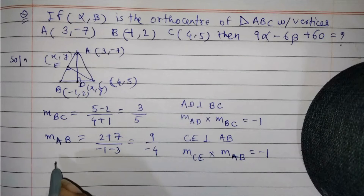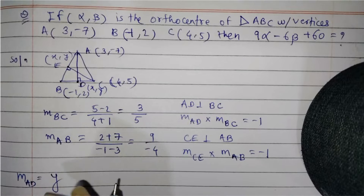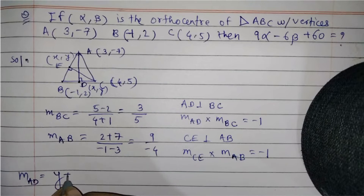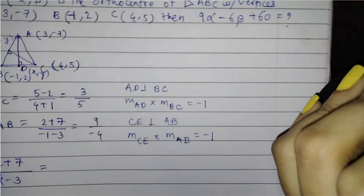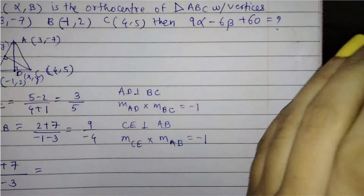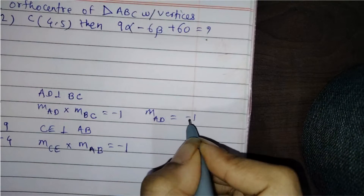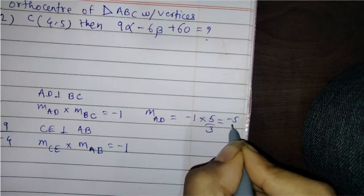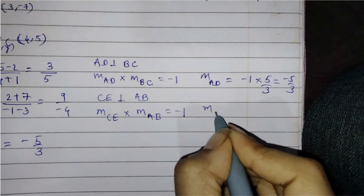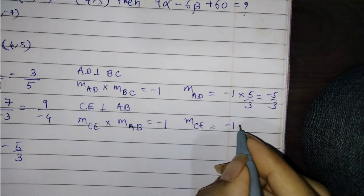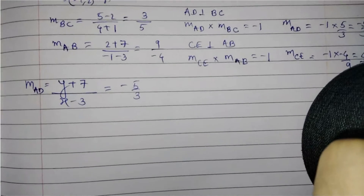The slope of AD can be written using the formula Y2 minus Y1. MAD is equal to Y minus minus 7 divided by X minus 3. So MAD equals minus 1 into 5 by 3, giving minus 5 by 3. And MCE equals minus 1 into minus 4 by 9, giving plus 4 by 9. We will use this information going forward.